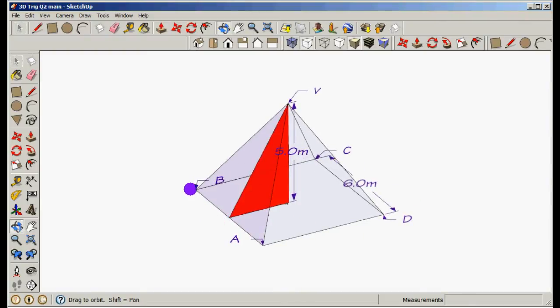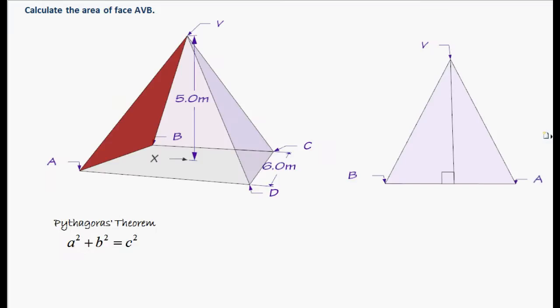But it shouldn't be too difficult because we know this length, and we know this length, which we worked out in an earlier question, VA. So we can use a bit of Pythagoras to find that, because we know that will be half of this. So let's go to the question.